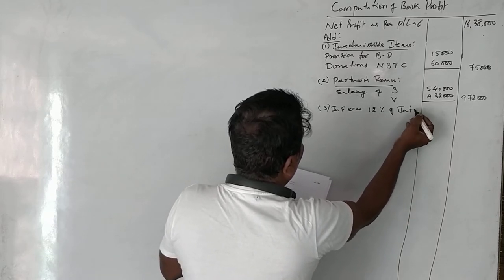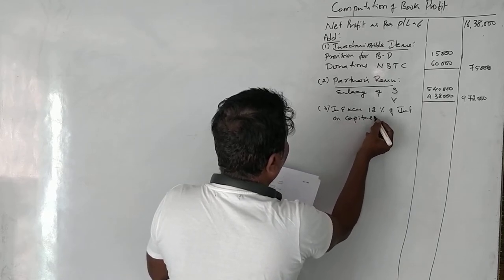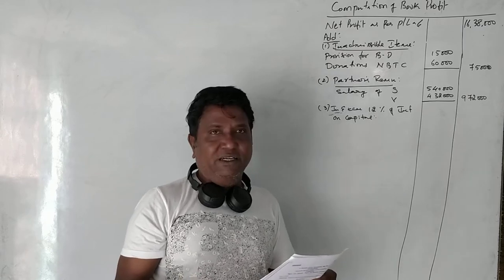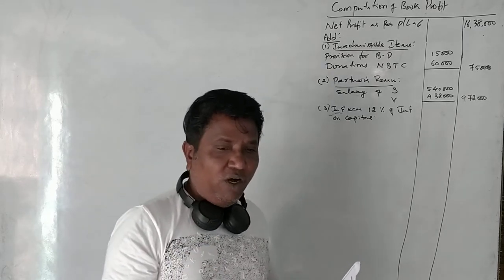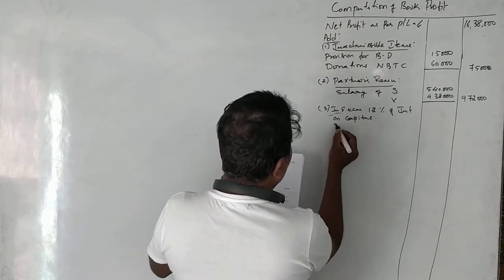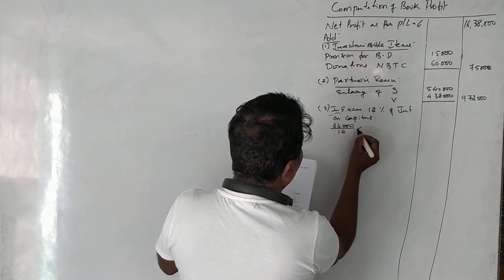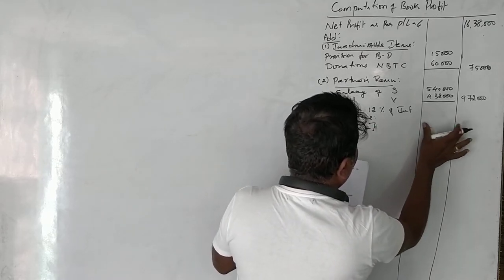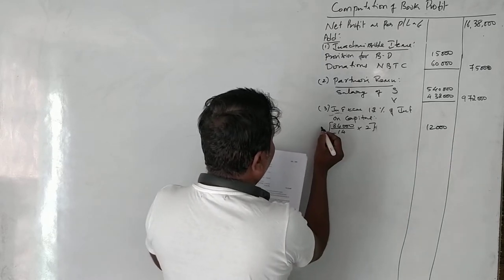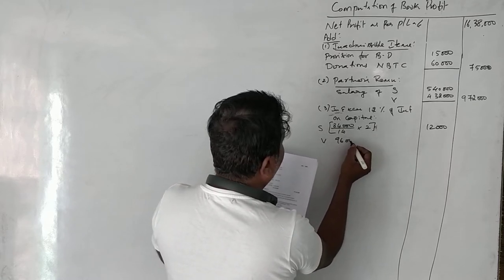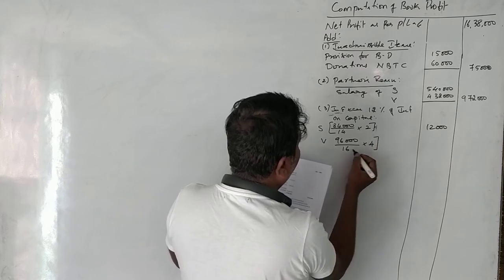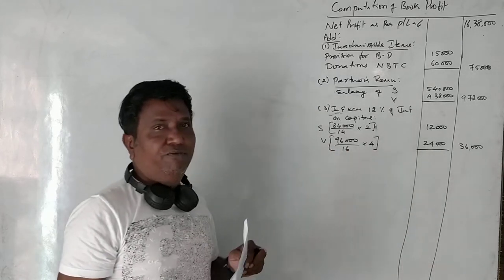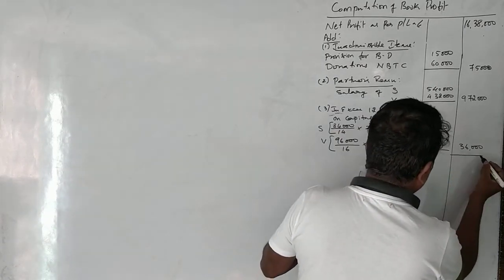The third item is interest on capital in excess of 12%. Interest on capital: Sean was paid at 14% and Venkat at 16%, but the exempted portion is up to 12%. For Sean, ₹84,000 was given at 14%, so the excess 2% comes to ₹12,000. For Venkat, ₹96,000 was given at 16%, excess 4% comes to ₹24,000. Total excess interest of ₹36,000 is inadmissible and added back.